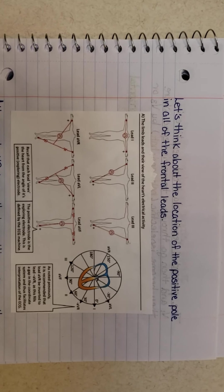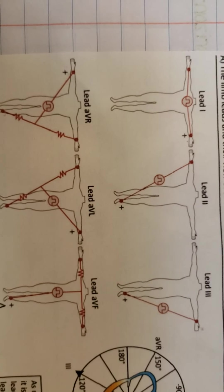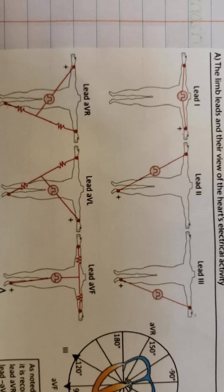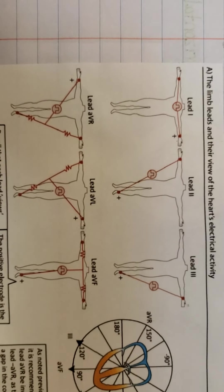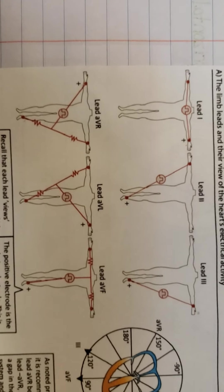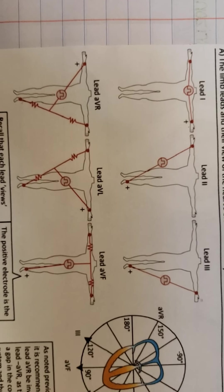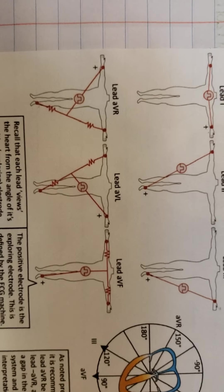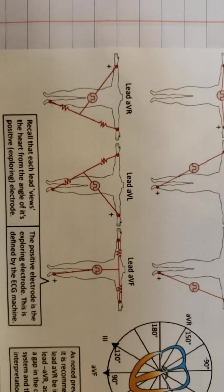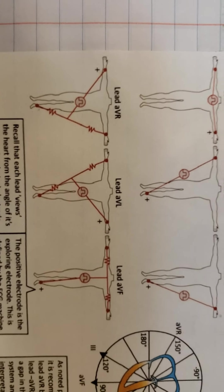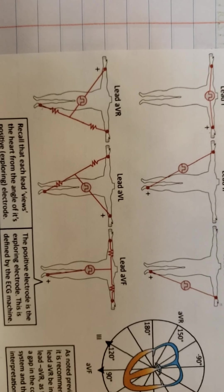Let's think about the location of the positive pole in all of the frontal leads. If we're looking at lead one, we know our positive pole is where? Left arm. Same thing with lead two. We know our positive pole is in left leg. Lead three, same thing, left leg. Well, what if we're looking at AVR? Here's the trick. Remember, augmented leads are all positive.